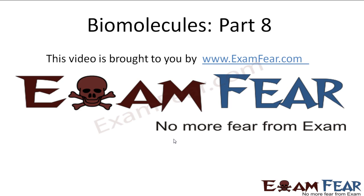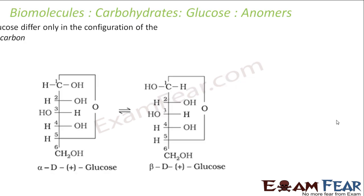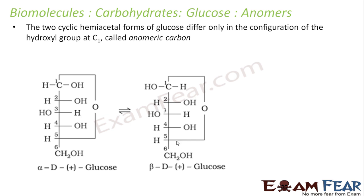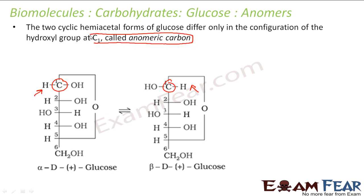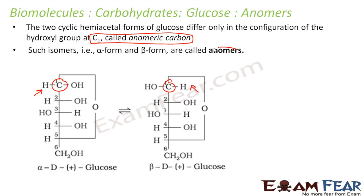This video on biomolecules part 8 is brought to you by examphia.com. If you see these two cyclic glucose structures we have formed, their configuration differs only because of C1 carbon. In one case hydrogen is on the left side, in the other case hydrogen is on the right side. So C1 carbon is called the anomeric carbon, and these two forms are called anomers — a type of isomers differing in the configuration of the hydroxy group at only one carbon, that is C1.